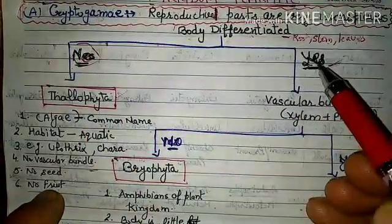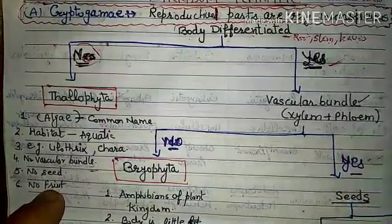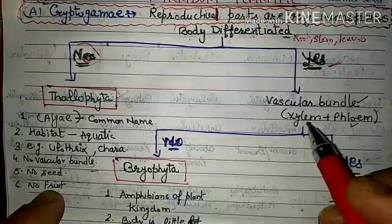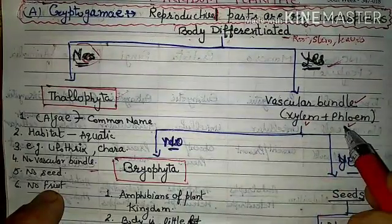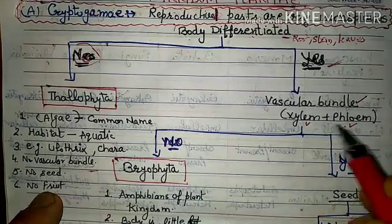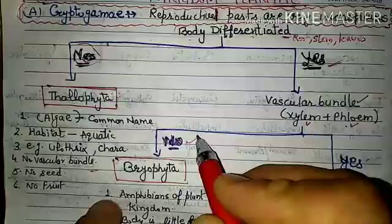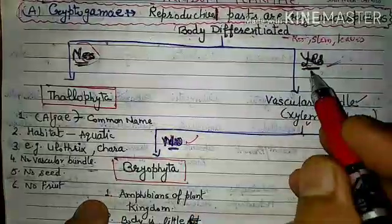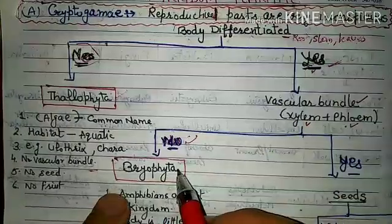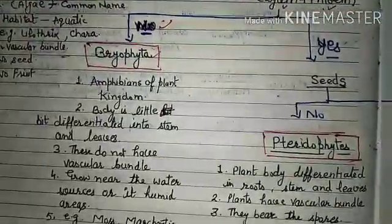If the body is differentiated, the next check is whether a vascular bundle is present. Vascular bundle means xylem and phloem — xylem transports water and phloem transports food. If there is no vascular bundle, then the division is Bryophyta.